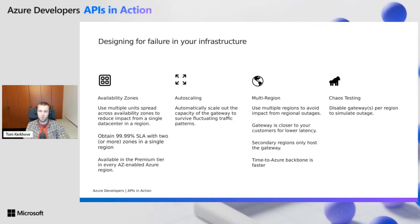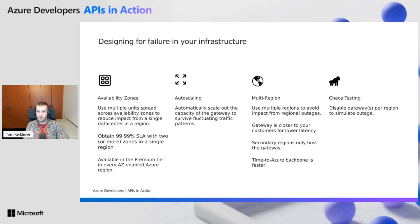We live in a global world, which means there are multiple regions. We want to make sure that a regional outage does not impact the whole platform and that our gateways are running as close to your customers as possible. This is where secondary regions come in. You can use one Azure API Management instance and deploy it to multiple locations, and bringing a gateway closer to your customer can also increase speed because you get faster into the Azure backbone instead of going over the public internet.